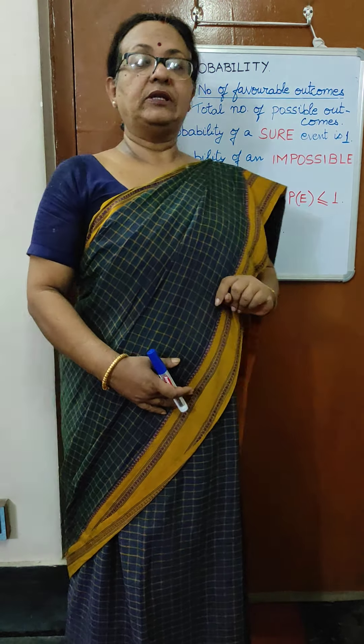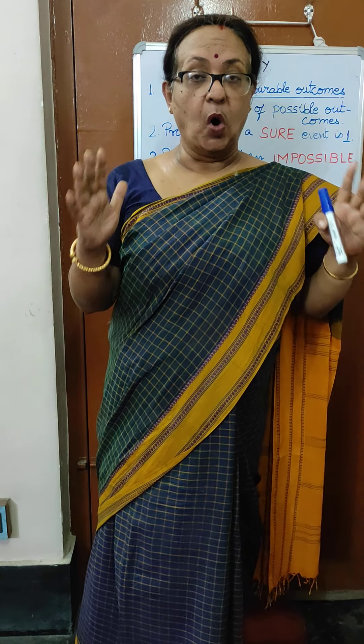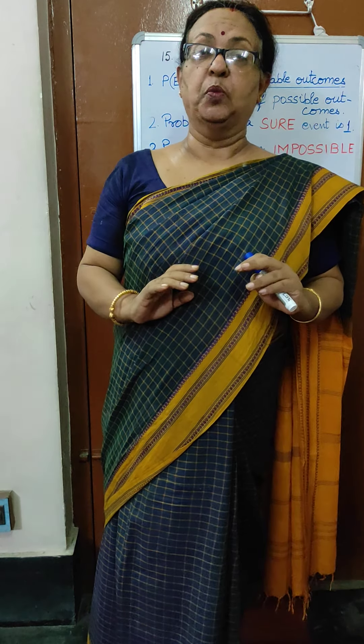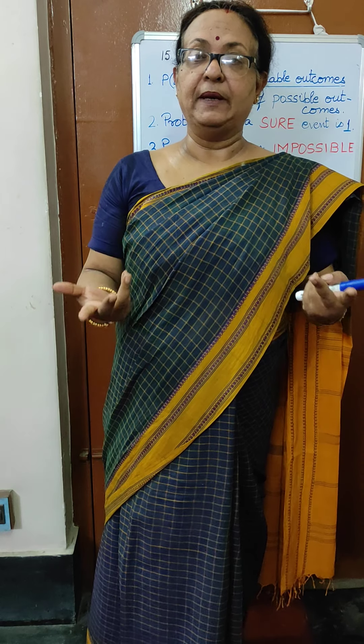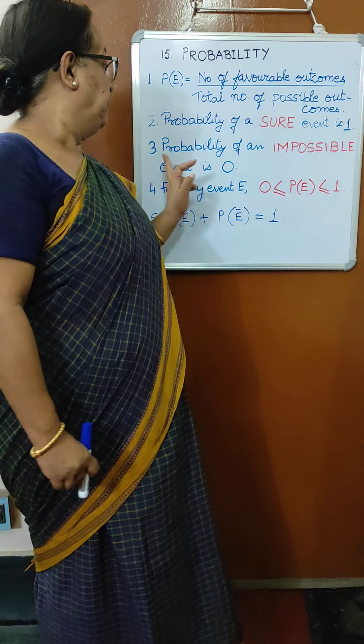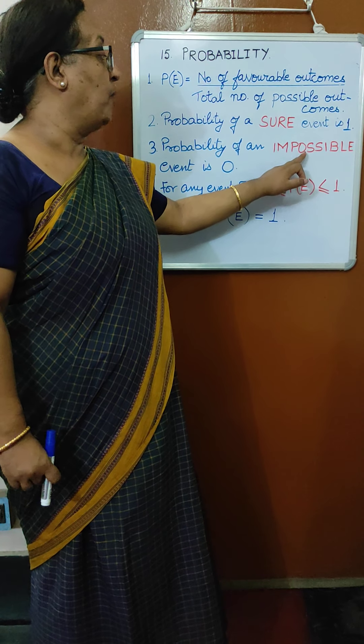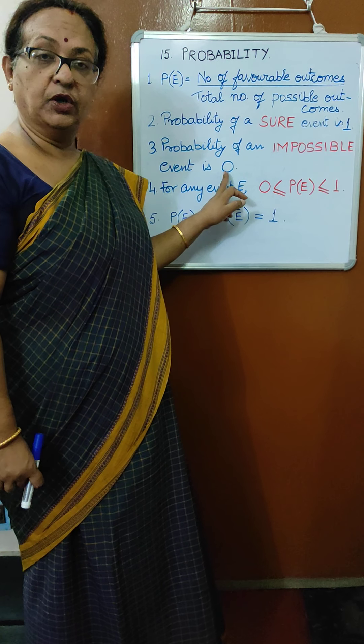Suppose I have a box containing 10 red balls. I take out a ball at random and I want a blue ball. Is it possible? Never. However many times I take out a ball, I will never get a blue ball. This is an impossible event, and the probability of an impossible event is 0.